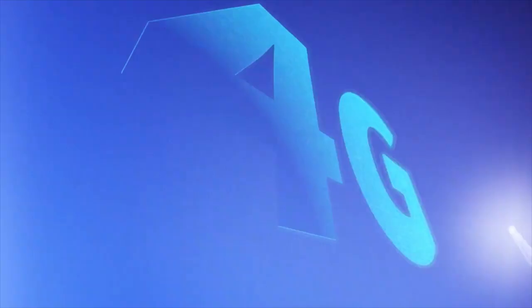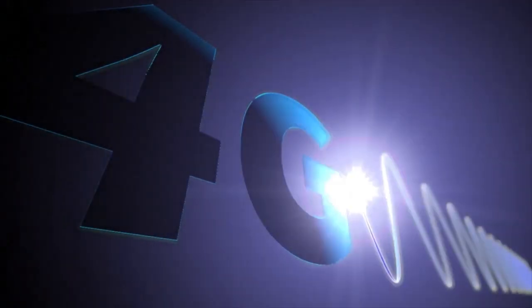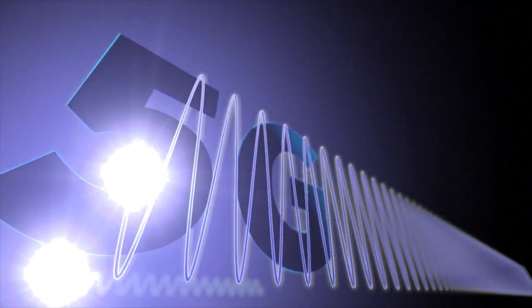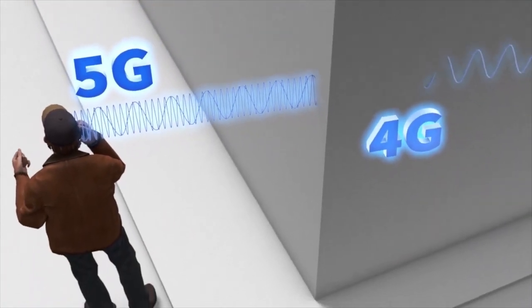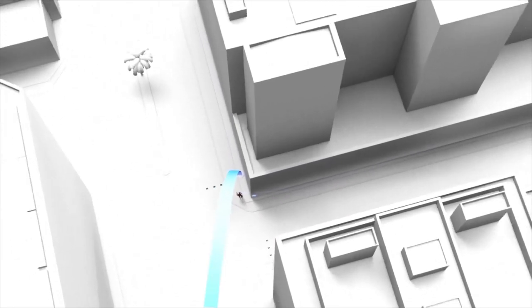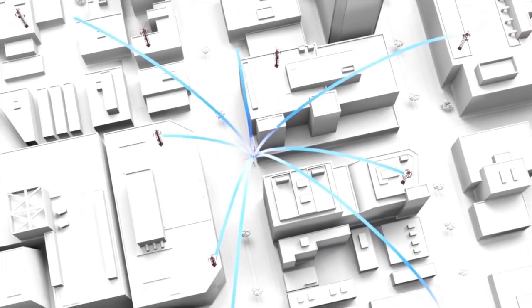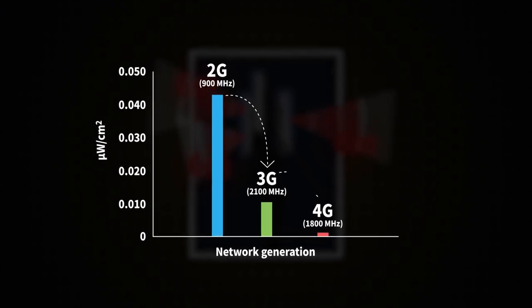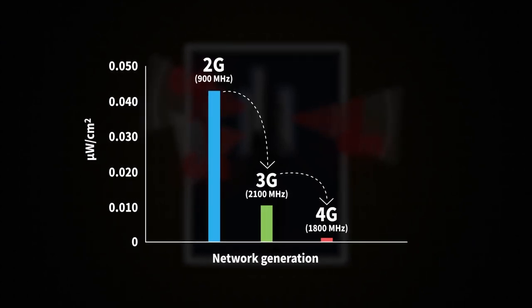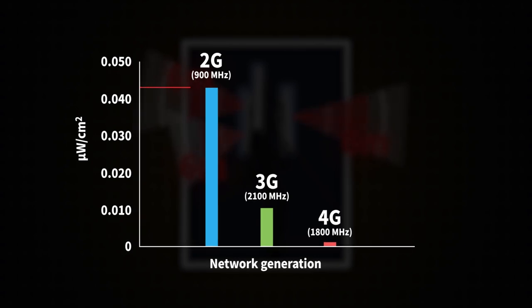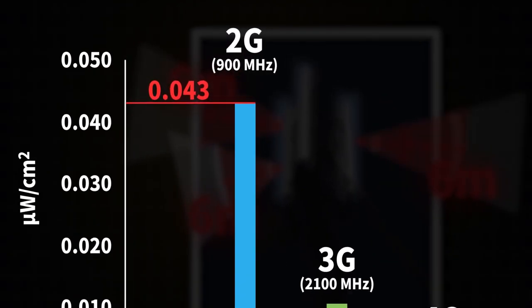In principle, 5G technology isn't any different. Moreover, it will be necessary to install more of these 5G antennas, which suggests that power and therefore potential damage to humans will decrease. That is, 5G will be safer than previous generations. By the way, we saw that with the increase in frequency, the flux of energy density decreases. In the measurements of the tower in Cairo, the 2G antenna emitted the most.